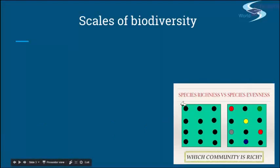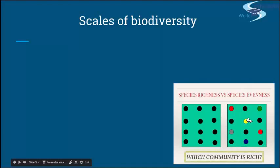This is a nice diagram showing the idea of richness and evenness. This would be species richness, and this would be species evenness. Different dot colors represent different species. Here you have only one species and it's evenly spread around — the same as this one — but this one is more rich in species diversity.